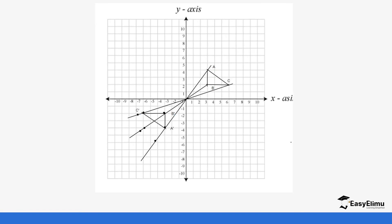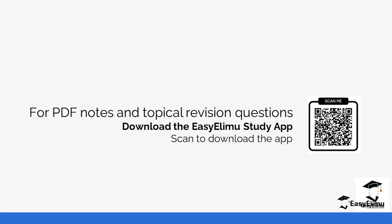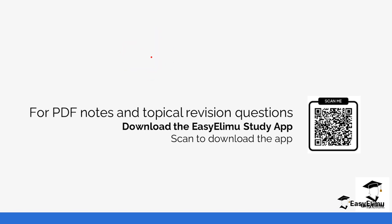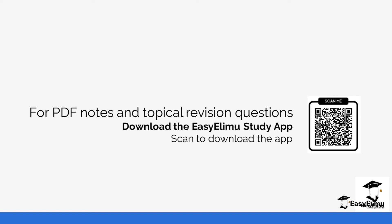And this is what we end up with. The size of triangle ABC is the same as triangle A'B'C' — the only difference is that it has been rotated 180 degrees anti-clockwise. That's how we do that question. Take your time, pause the video step by step, and do the drawings yourself using graph paper, a protractor, and a ruler. You can get more notes and revision questions in the app. See you in the next lesson.